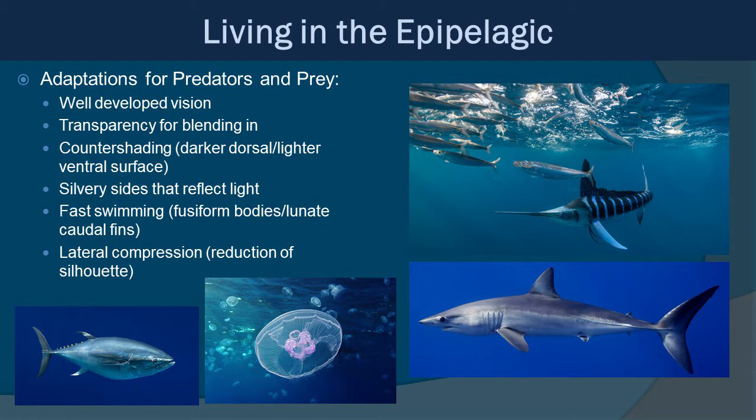Silvery sides are also really important, seen on a lot of jacks and silvery fish. They shimmer and reflect light, helping to blend into the surrounding light field. Just being able to swim fast — like the marlin in the picture — with that lunate tail, speedy body, and fusiform shape, helps them torpedo through the water more effectively. There's also lateral compression, which reduces drag and resistance as they move forward.